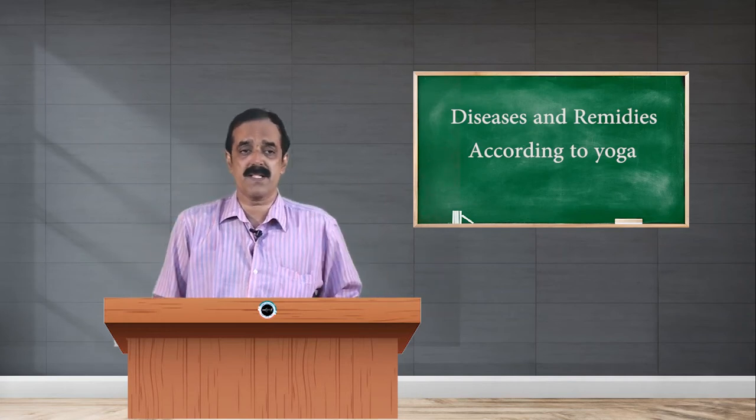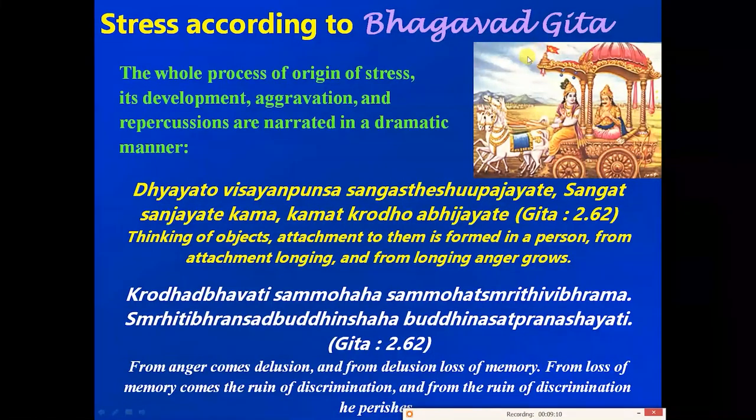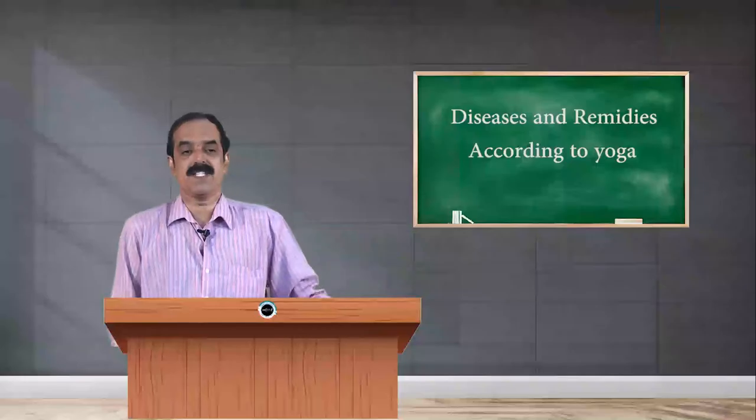Similarly, Bhagavad Gita says dhyayato visayah pumsah sangah teshu upajayate - thinking of an object leads to attachment, attachment leads to desire, desire leads to anger. Krodhat bhavati sammohah - from anger comes delusion. Sammohat smriti vibhramah - delusion leads to loss of memory. When buddhi is lost, it will ruin your life if discrimination is not there.